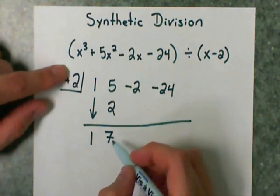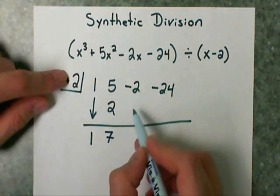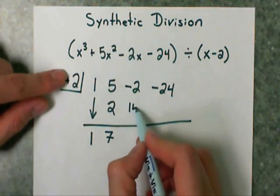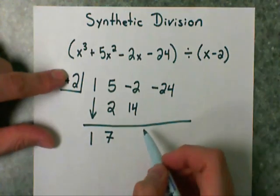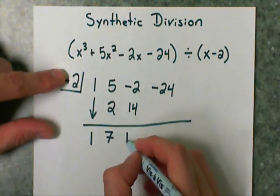Again, I'm going to multiply the number in the box to the number under the line. 2 times 7 is 14, and that will go under the minus 2. I'm going to add these together and get 12.